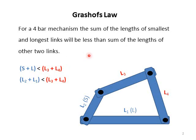To clarify this law, let's see an example at the bottom right-hand side. You can see a four-bar mechanism where the length of each link is different. Link 1 has length L1, link 2 has length L2, link 3 has length L3, and link 4 has length L4. The longest link is L1, represented by capital L, and the smallest link is link 2, represented by capital S. According to Grashof's law, S plus L must be less than the sum of the remaining two links.